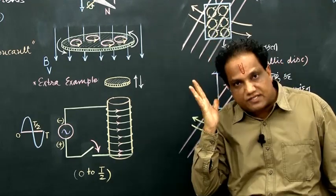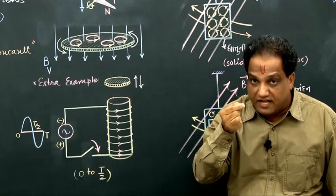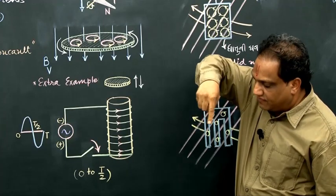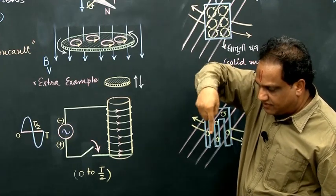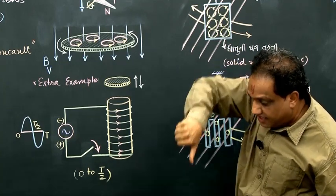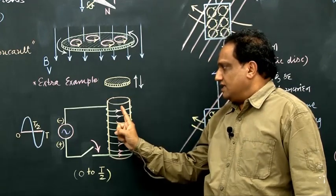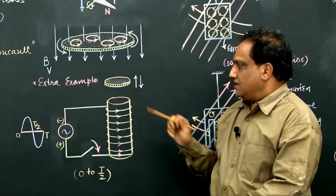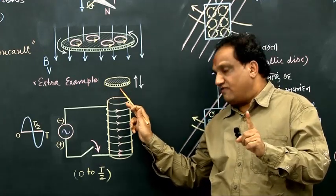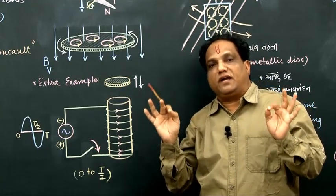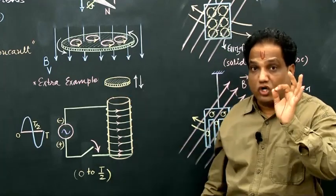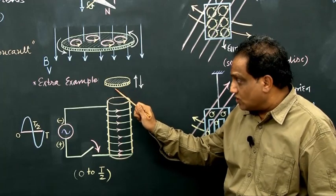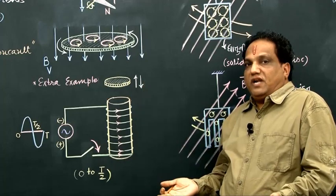Because of change in magnetic flux, eddy currents are produced in the disc. These eddy currents obey Lenz's law. If you observe from the top, they are flowing clockwise. When they flow clockwise, they produce their magnetic field vertically downwards. The magnetic field of the solenoid and the magnetic field produced by the eddy currents oppose each other. The top face of the solenoid and the bottom face of the disc both behave like north poles. Since like poles repel each other, this induced north pole repels the solenoid's north pole, and the disc is lifted up.